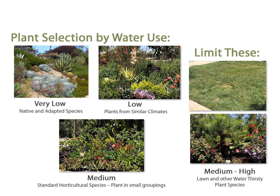When we look at plants and want to design for water conservation, we're looking at native and adapted species which are generally very low water use. Low also includes plants from similar climates — depending on the ecosystem, they might be in low or medium water use even if native. Standard horticultural species is what you've traditionally seen used in our region; turf is considered medium-high, as are heavy tropicals like papyrus and canna, which we don't see a lot of after the last round of droughts.